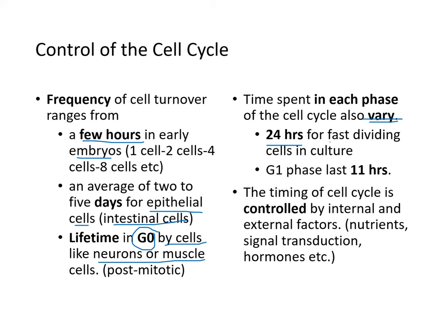For fast-dividing cells in culture, the cycle is about 24 hours, and G1 phase lasts about 11 hours. The timing of the cell cycle is controlled by internal and external factors such as nutrients, signal transduction, and hormones.